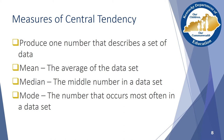Finally, the mode represents the score that occurs most often within a distribution of scores. This can be valuable when exploring clusters of students and discussing why they are or are not moving at the same rate as other students. A distribution of scores can have two modes, which is called bimodal, or three or more modes, which is often called a multimodal distribution.